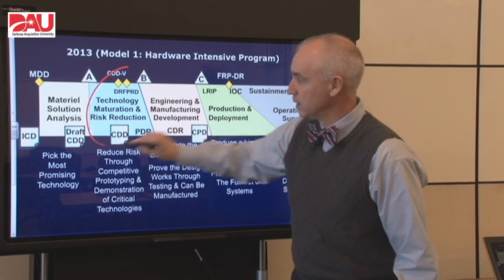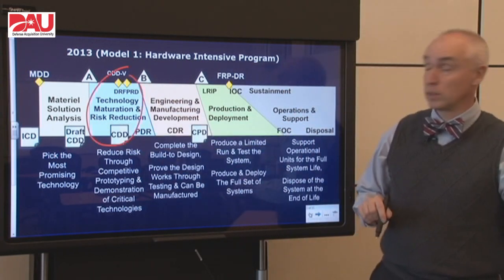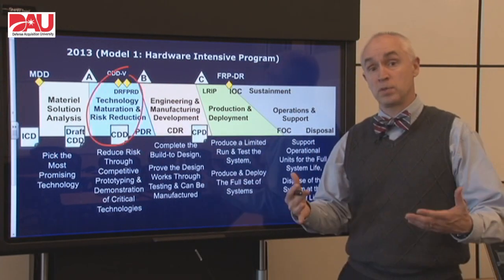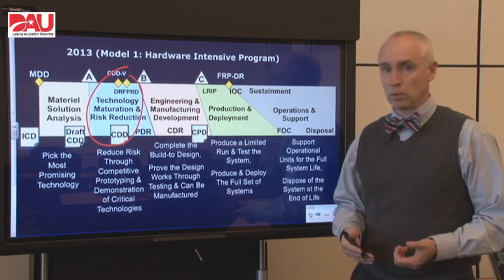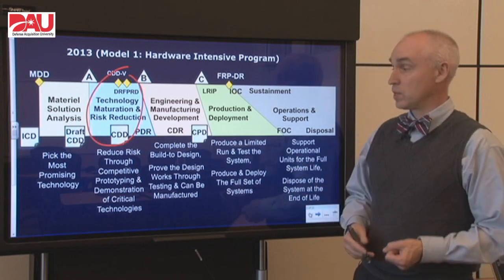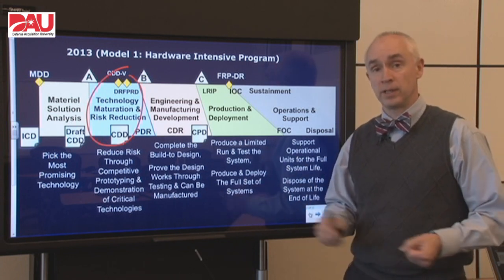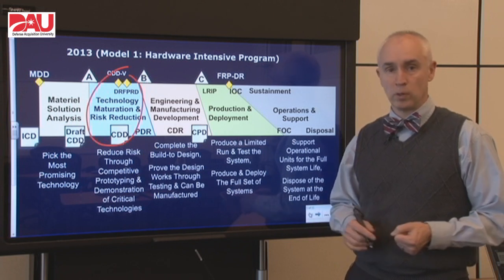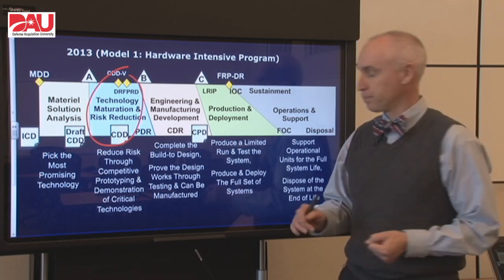This is the second phase. Recall that in the first phase, material solution analysis, we picked what we thought was the best technology to go forward with and mature. And now that's exactly what we're going to do — we're going to mature that technology through competitive prototyping to reduce the overall risk on the program.